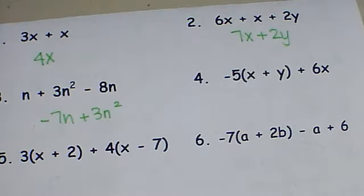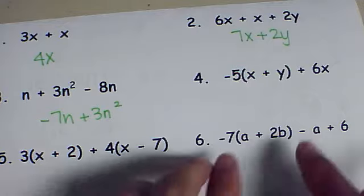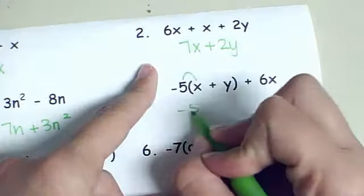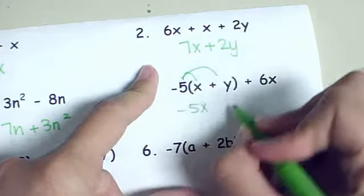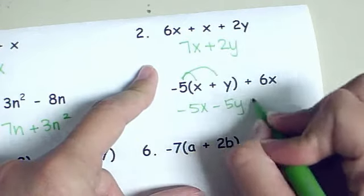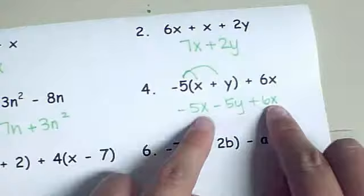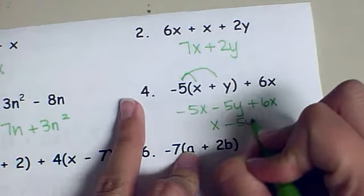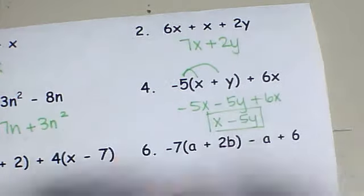My next class is about to start so I'm going to go real quickly through this last one with you. I want to distribute here first. Negative 5 times x is negative 5x. Negative 5 times y is negative 5y plus 6x. I have x terms that are alike. Negative 5 and positive 6 make just x minus 5y. And that's my final answer.